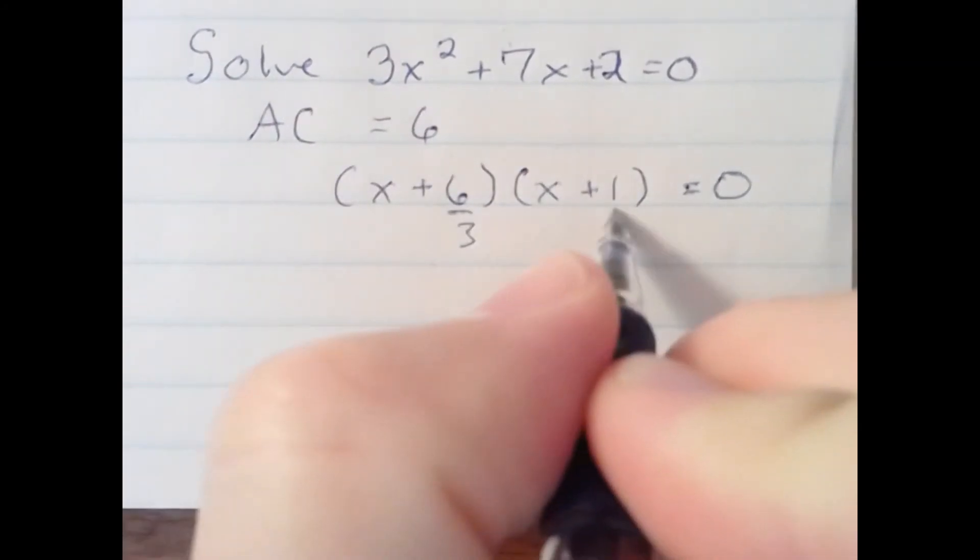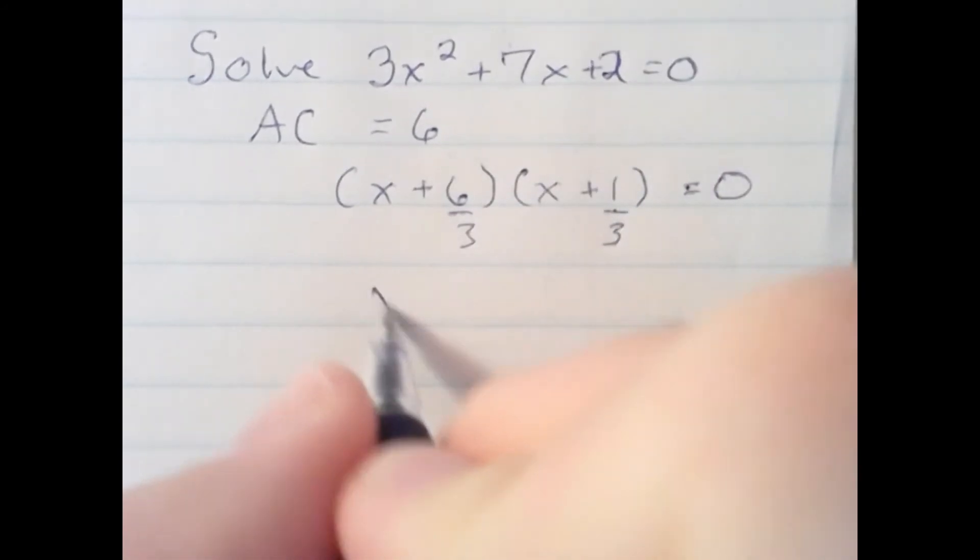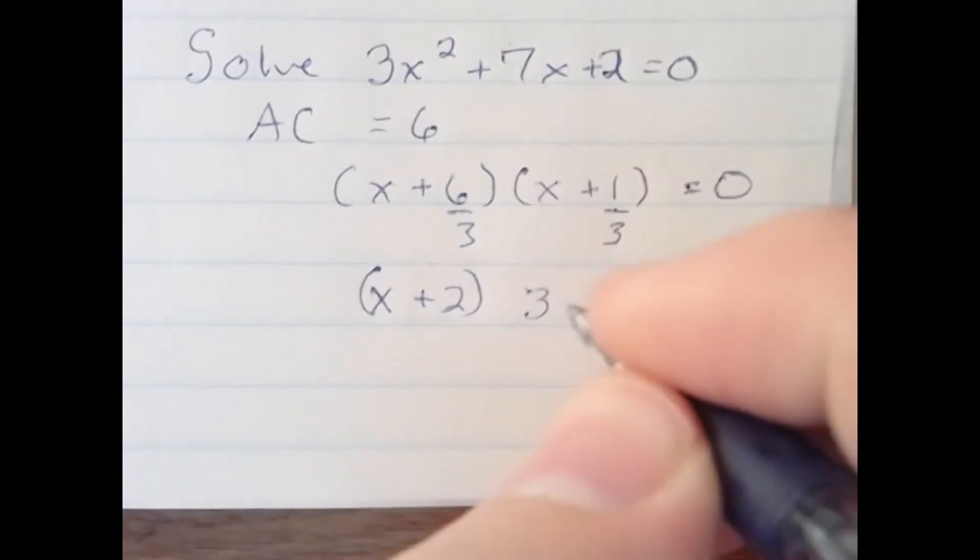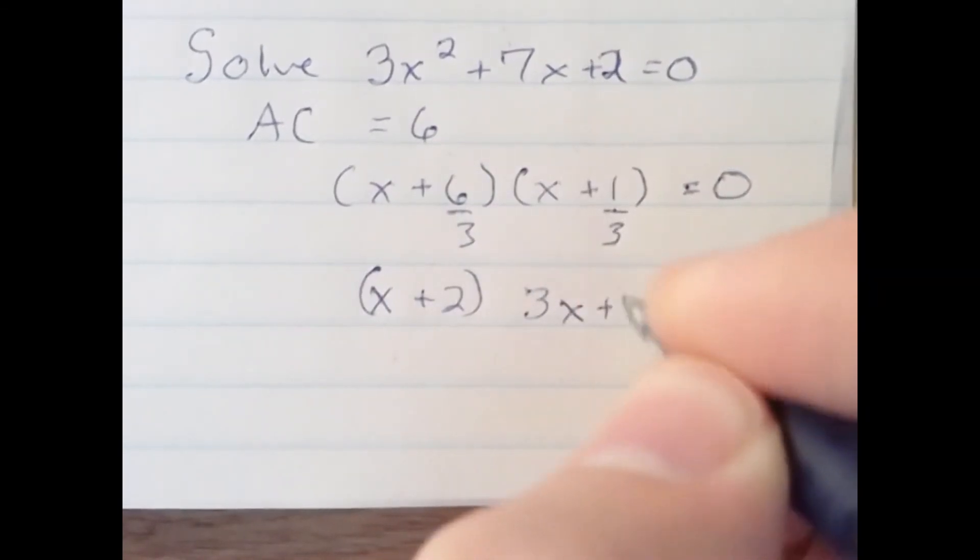We'll divide each of these by 3. If it divides, that's great. This one divides. This one does not, so we put the 3 in front of the x of that binomial term.